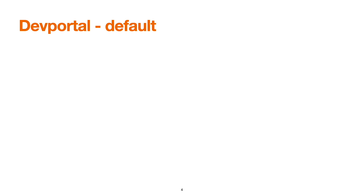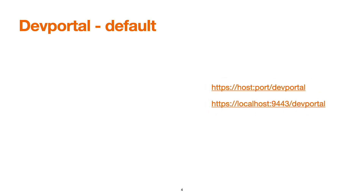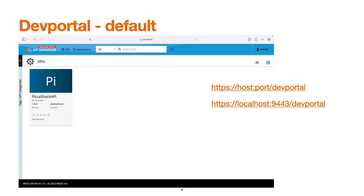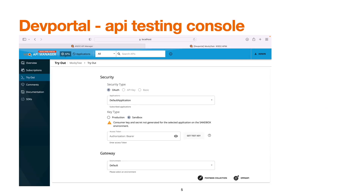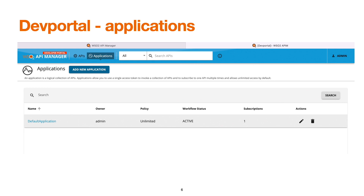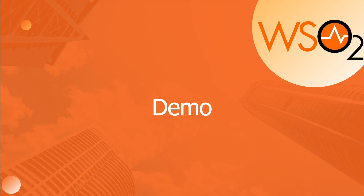Let's take a quick look at the different sections of the developer portal. This is the default screen of the developer portal, seen when we navigate to localhost:9453/devportal. We also have an API testing console, which appears when we navigate to a particular API. Finally, there is the applications screen where we can see the list of applications and proceed with the available operations.